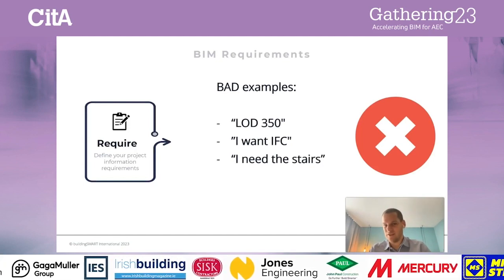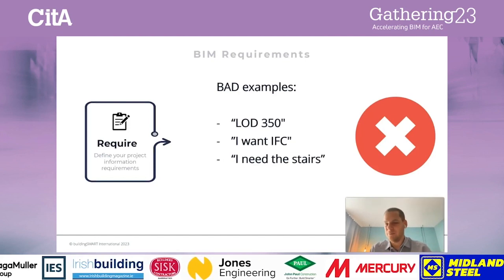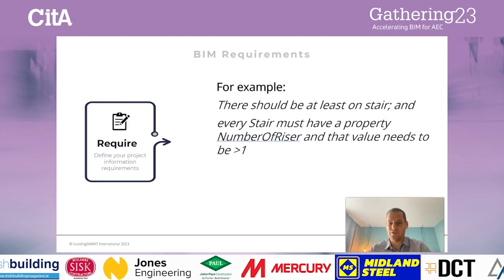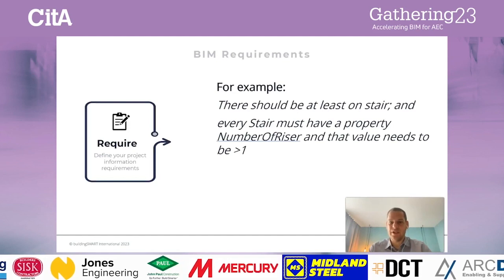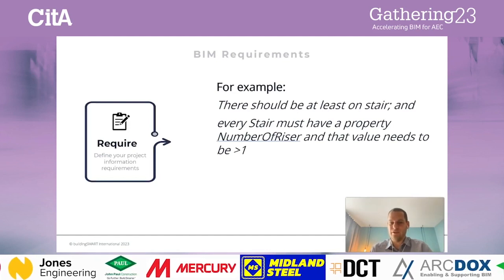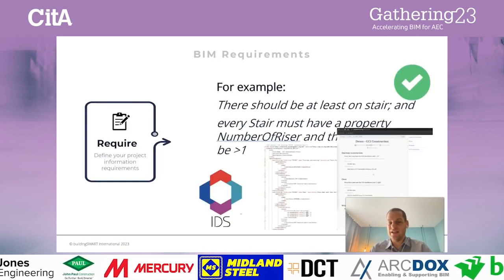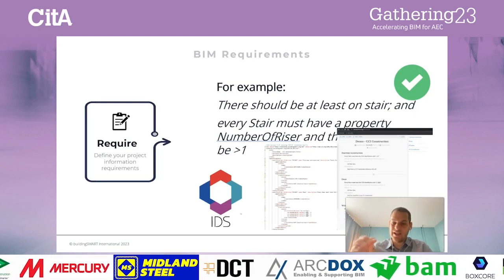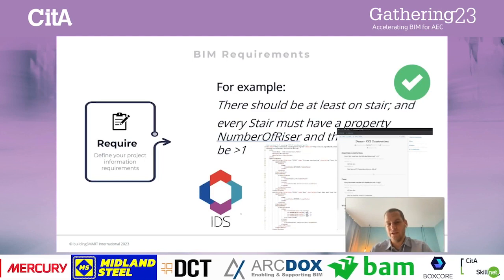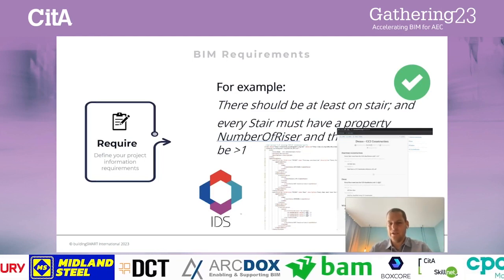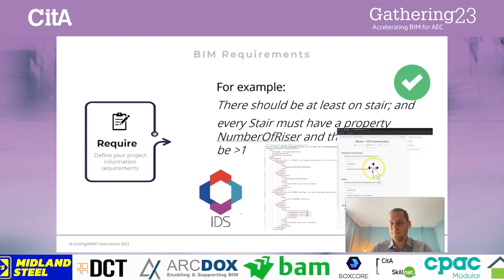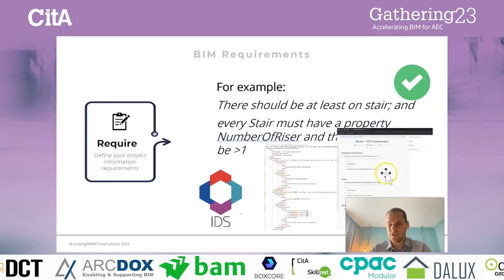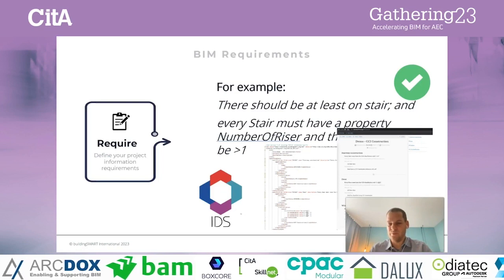We see a lot of requirements that are not good examples — 'I need LODs,' 'I want IFC,' 'just send me anything you have,' 'I need a product data template,' 'I need a digital building passport.' That's really not specific enough. We're trying to push the industry to be specific. For example, staying on the theme of stairs: there should be at least one stair, every stair must have a property 'number of risers,' and the value needs to be more than one. This is where IDS comes in — the Information Delivery Specification is a Building Smart standard that allows you to structure these requirements in an XML format so they are computer interpretable. There are viewers that transform it into contractual text you can add as an addendum to your contract, so you have both contractual text and computer-interpretable parts.